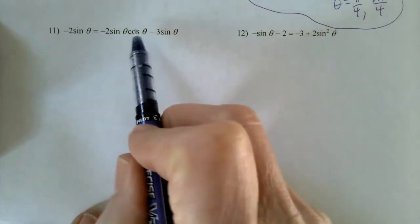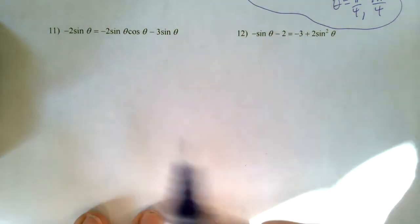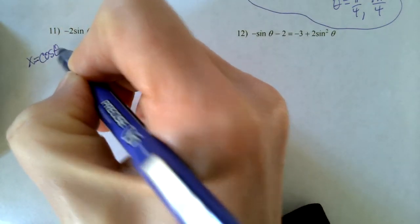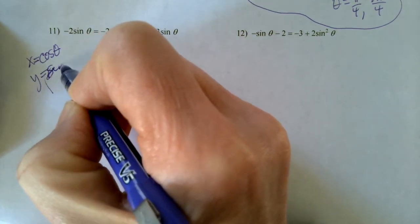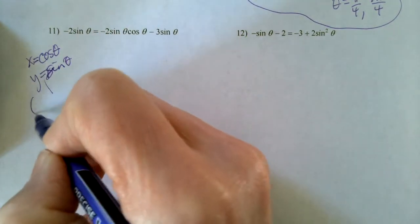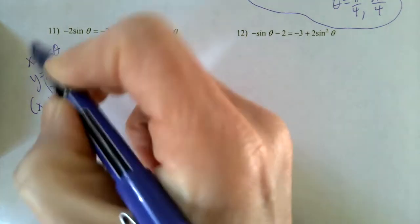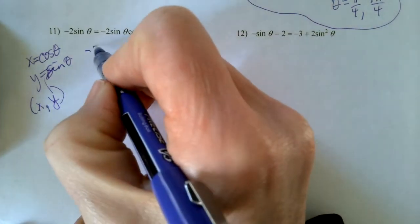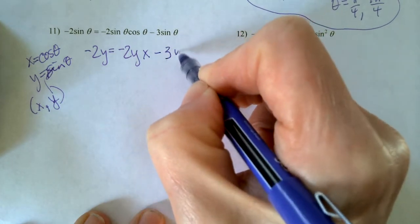So next one here, I have sine and cosine. When it's sine and cosine, again it doesn't matter what variable you use, but sometimes I'll make sure I make x be cosine because that's what we're used to, and y be sine because that's what we're used to. In our x, y coordinates, that's what they are. It goes cosine, sine. So sometimes I do that just for my own personal preference. So this is negative 2y equals negative 2yx minus 3y.